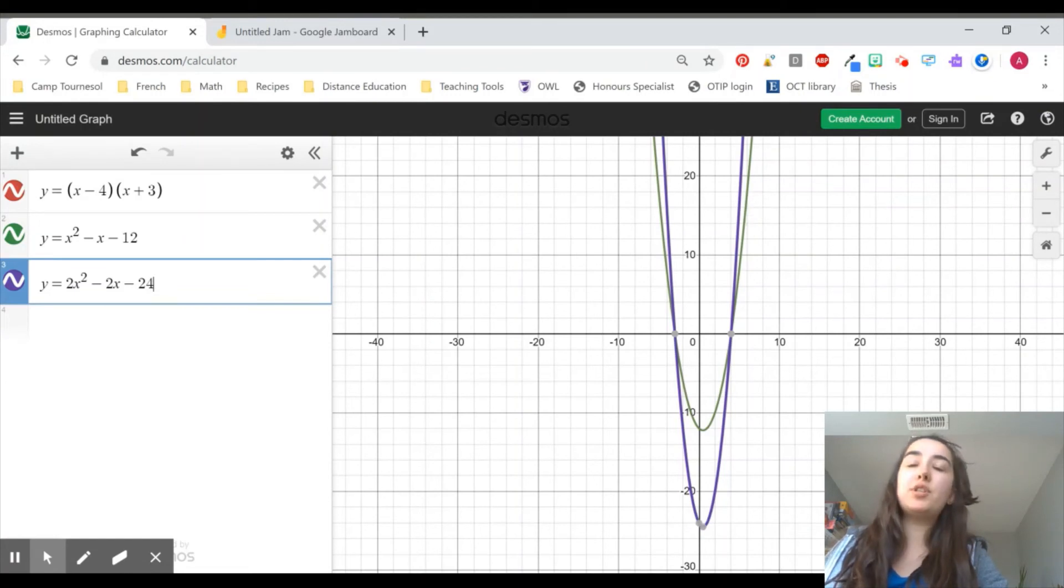When you were finding the equations of lines, straight lines in grade 9, you needed two points. The two points would allow you to find the slope, and you could use those two points to figure out your y-intercept. As we can see here, we need a little bit more information than just two points because two points can have a lot of different meanings. Here I gave you two points, but that wasn't enough information. We need a third point, and that's where this lesson comes into play.